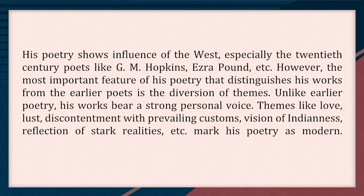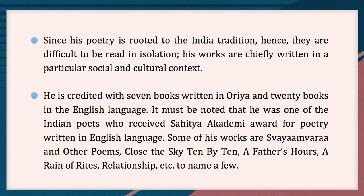Unlike earlier poetry, his works bear a strong personal voice. Themes like love, lust, discontentment with prevailing customs, vision of Indian-ness, and reflection of stark realities mark his poetry as modern. Since his poetry is rooted in the Indian tradition, they are difficult to be read in isolation. His works are chiefly written in a particular social and cultural context. He is credited with seven books written in Uriya and twenty books in the English language. He was one of the Indian poets who received the Sahitya Academy Award for poetry written in English. Some of his works are Swayamvara and Other Poems, Close the Sky 10 by 10, A Father's Hours, A Reign of Rights, and Relationship, to name a few.